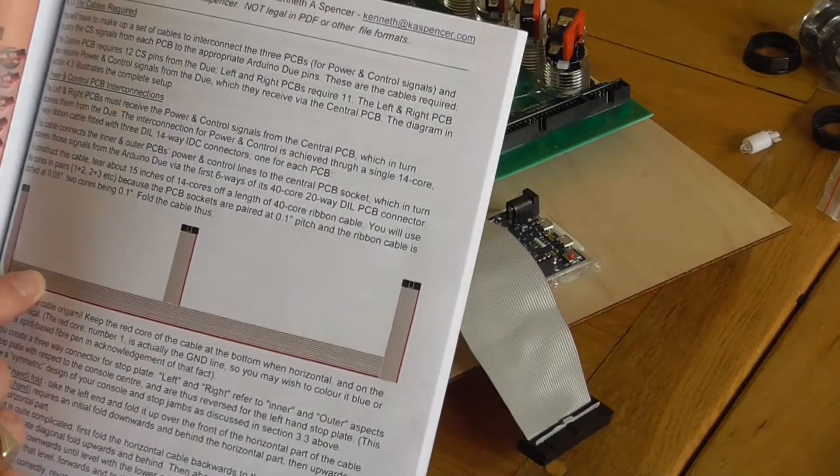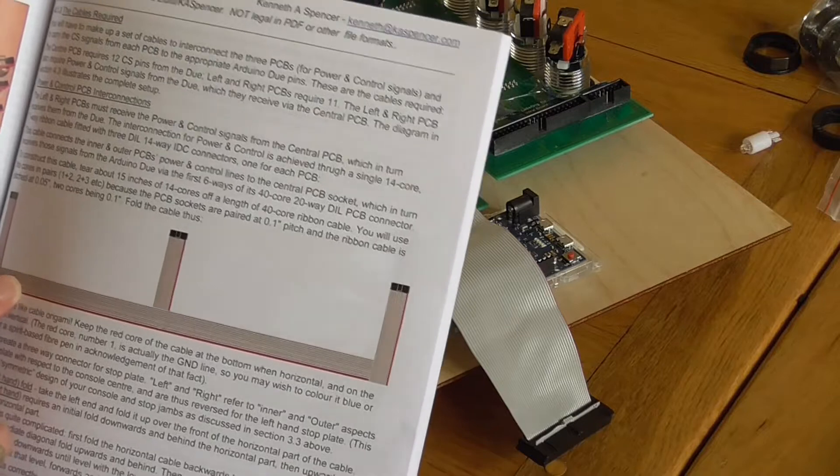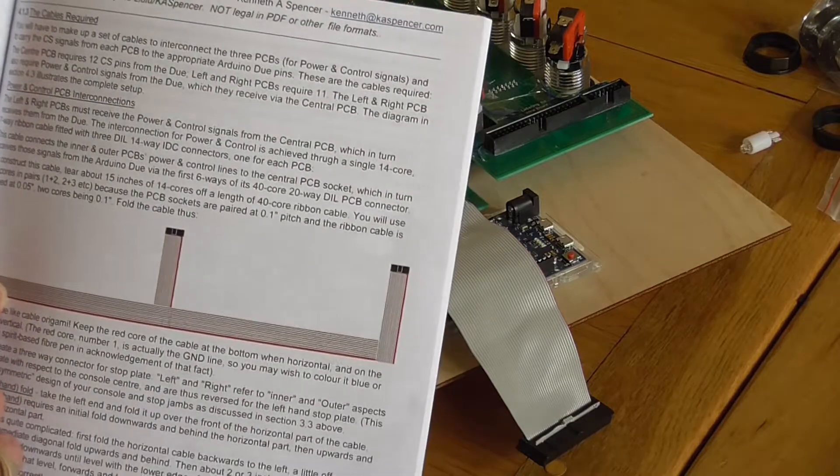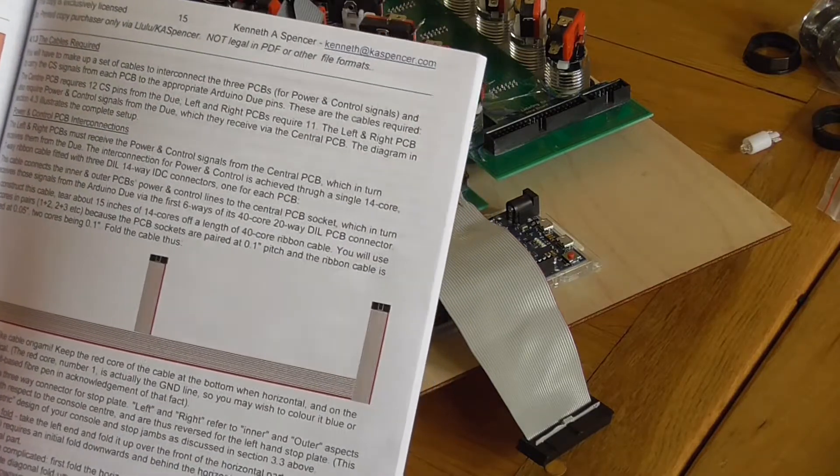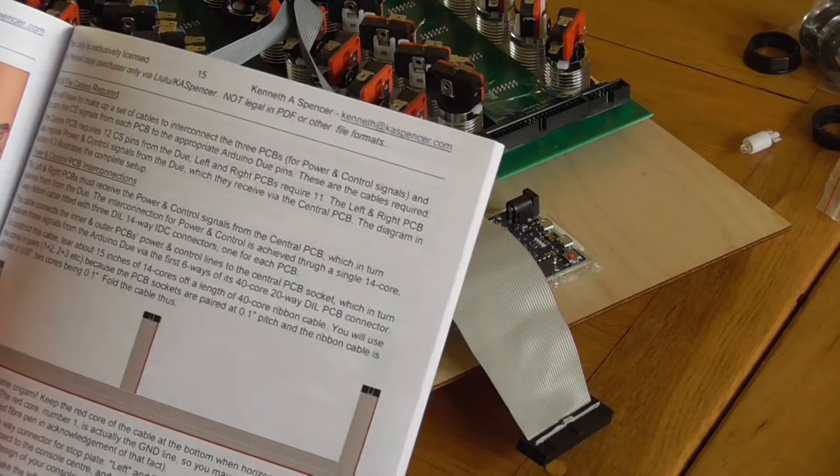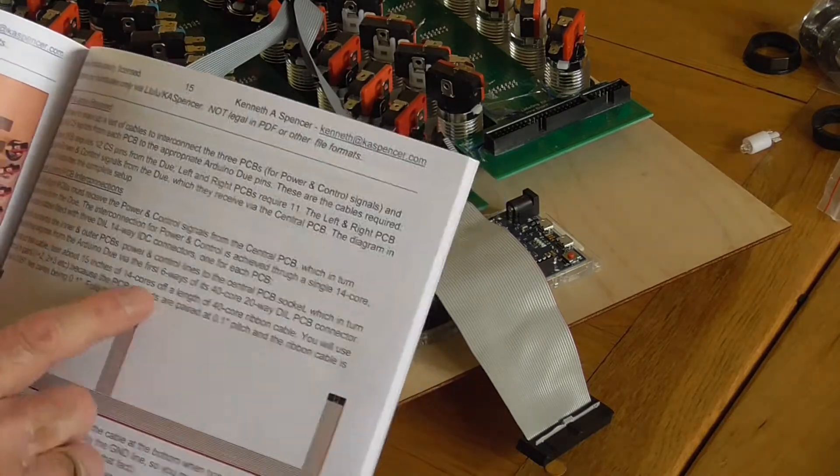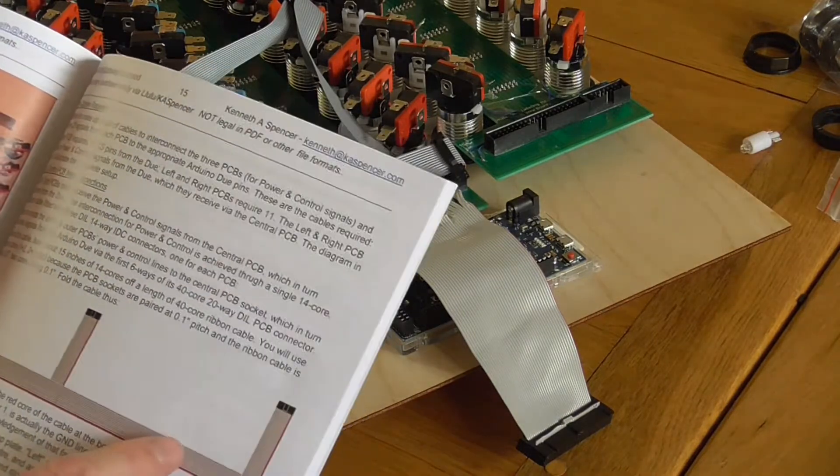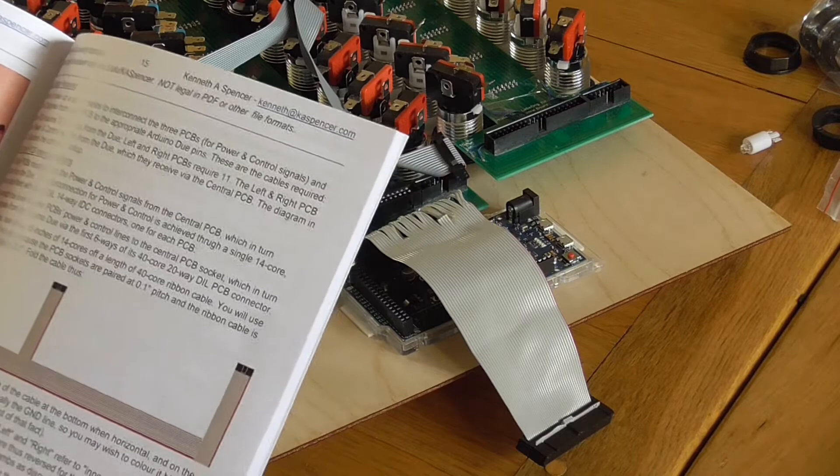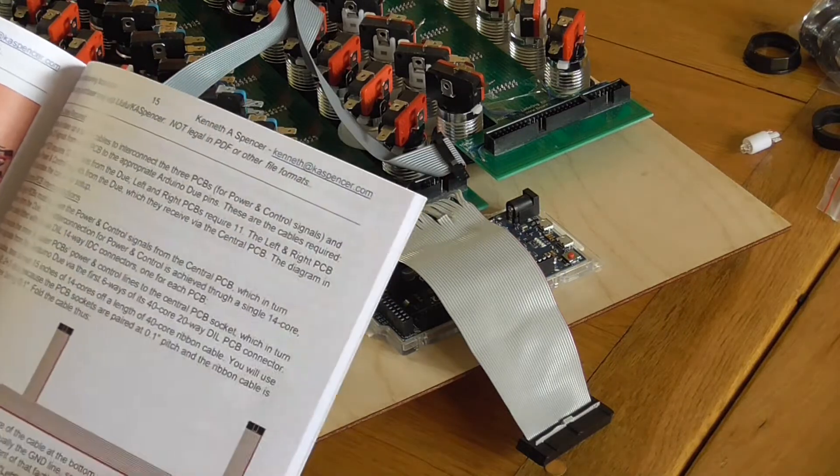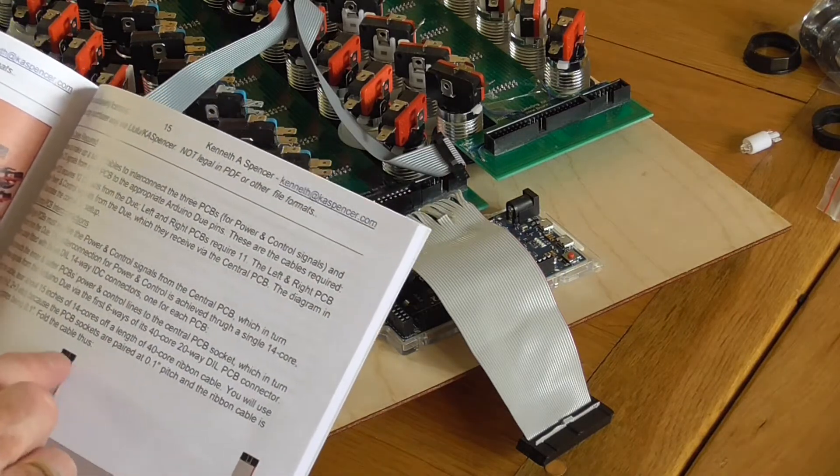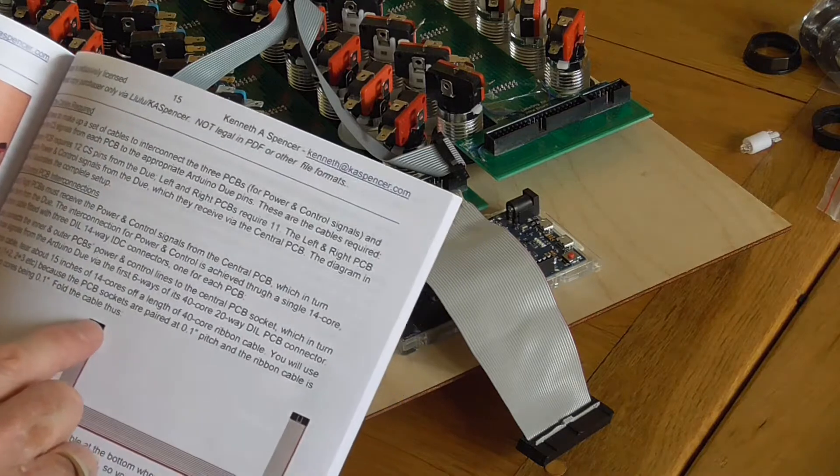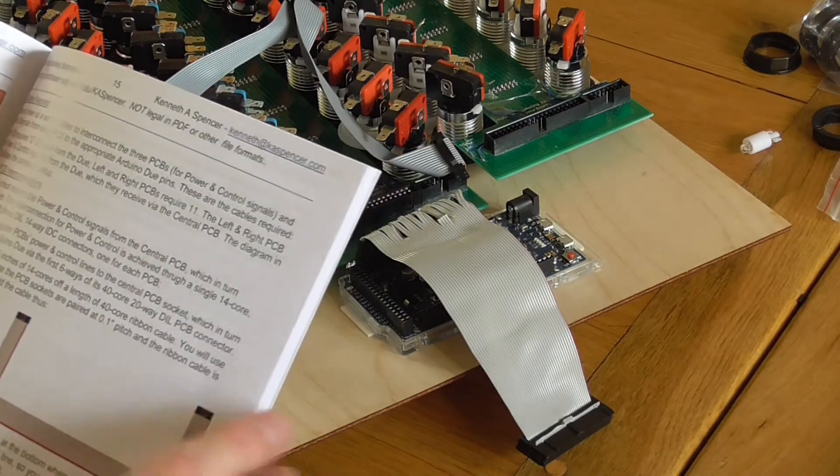This is a cable which connects the three PCBs together. It has three IDC insulation displacement connectors on that one cable. It's actually a full length cable and it's folded so that we can put one connector in the middle and one connector for the inner and one for the outer.